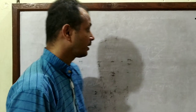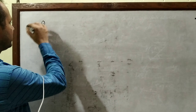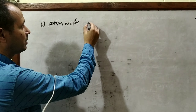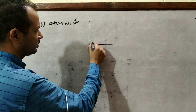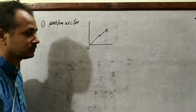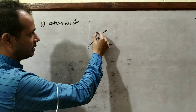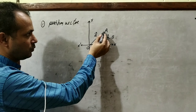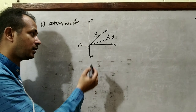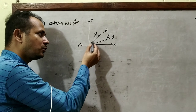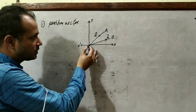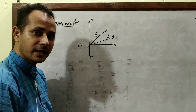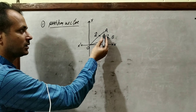Now some special types of vectors. First: position vector. Any vector which starts from the origin is a position vector. For example, vector OA — this is a position vector. Vector OB is also a position vector. Both points A and B are connected from origin O, so OA and OB both start from origin. A vector which starts from origin, or having origin as its initial point, is a position vector with respect to the origin.